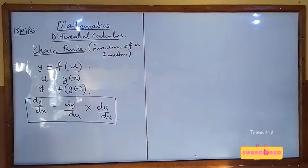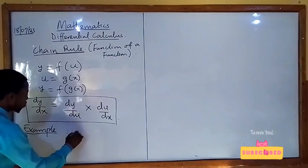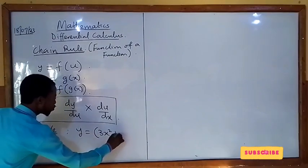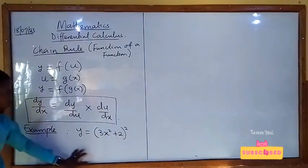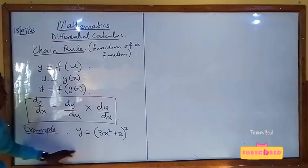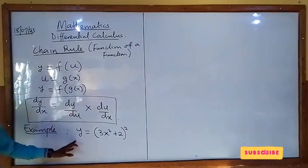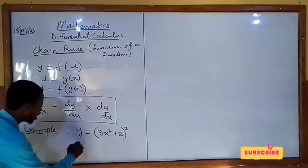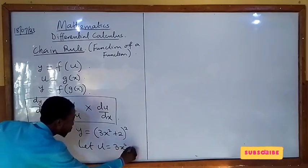Let's look at an example. Differentiate the function y equals (3x² + 2)² with respect to x. We want to find the differential coefficient of this function with respect to x. When you look at this function, you see that y is a function of a function. We can let u equal 3x² + 2.